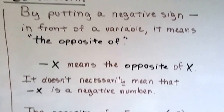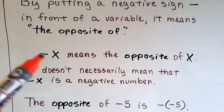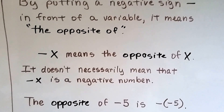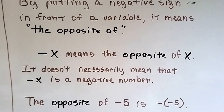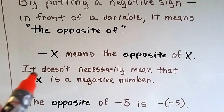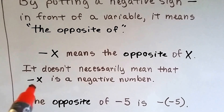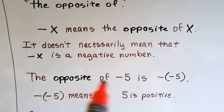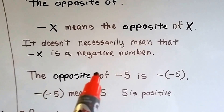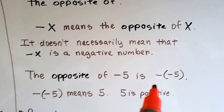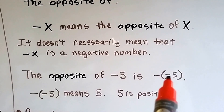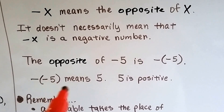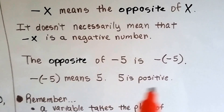You've got to be very careful. So if you see a negative sign in front of an x, it means the opposite of x. It doesn't necessarily mean that minus x is a negative number. It just means the opposite of it. So if this x was really a 5, the opposite of negative 5 would be a negative of a negative 5. The negative times a negative 5 means 5 — 5 is positive. We've got two negatives.